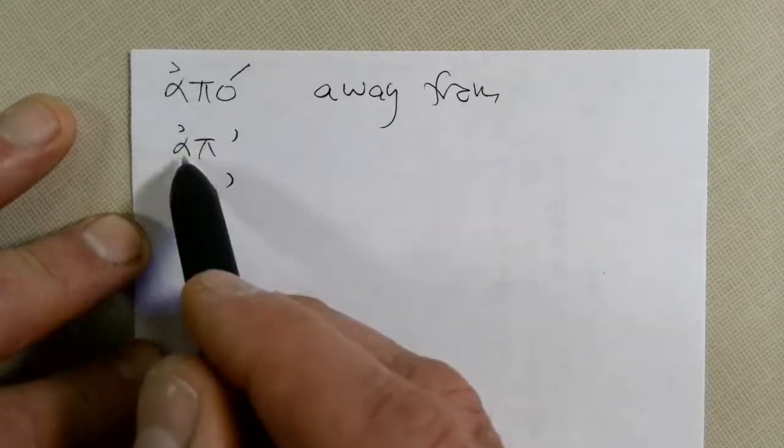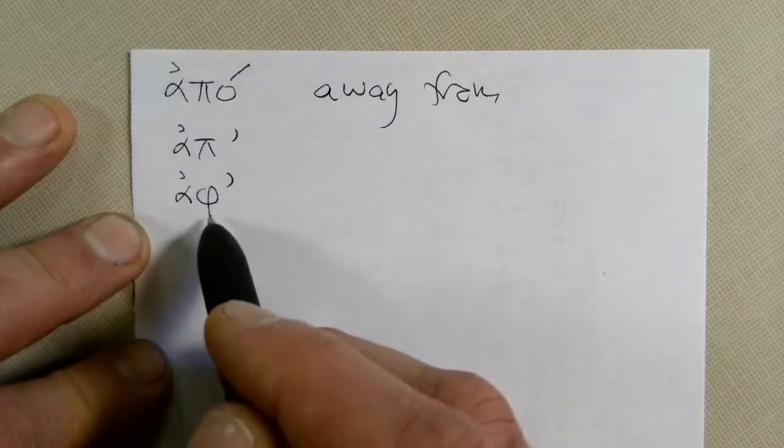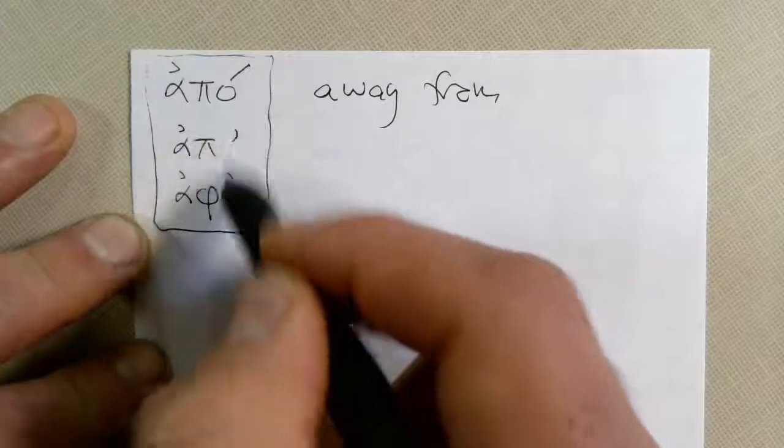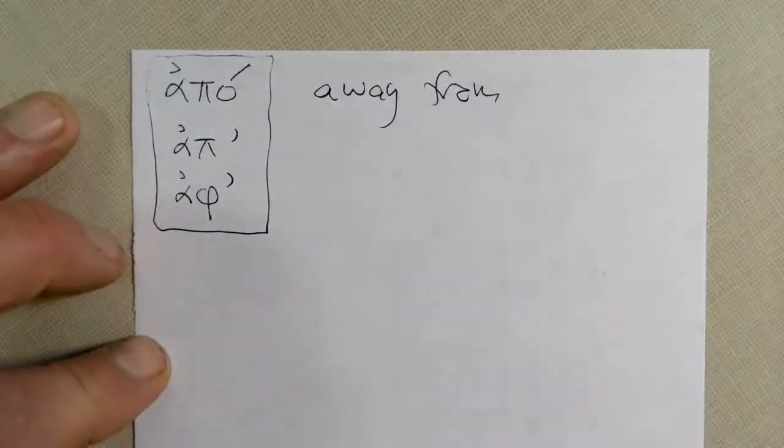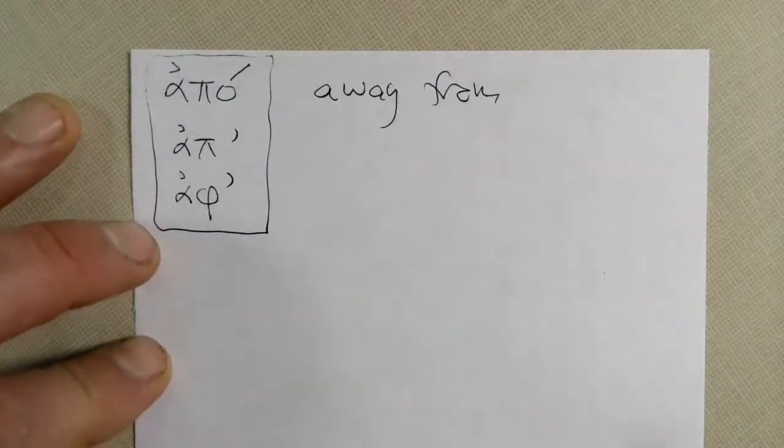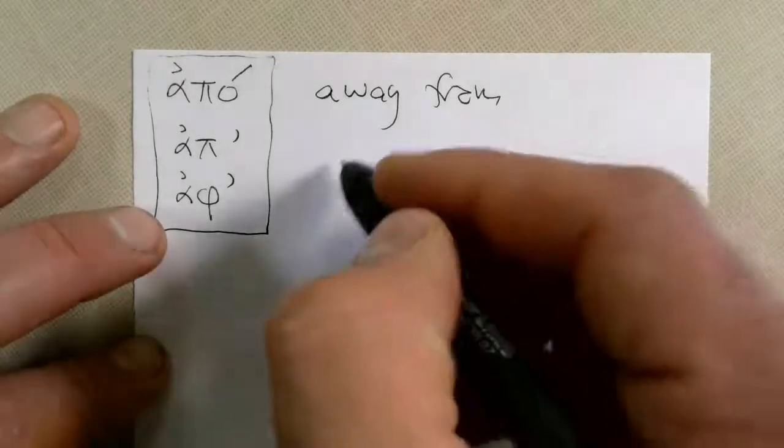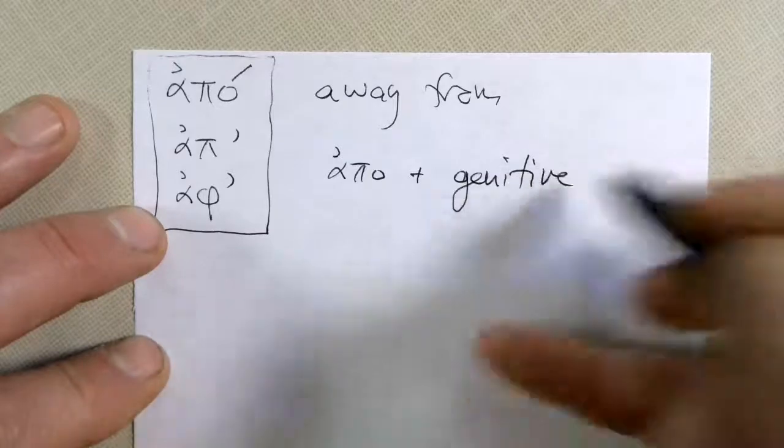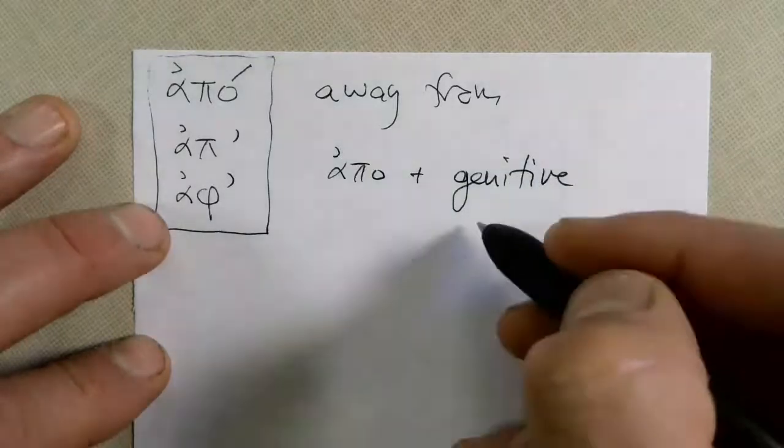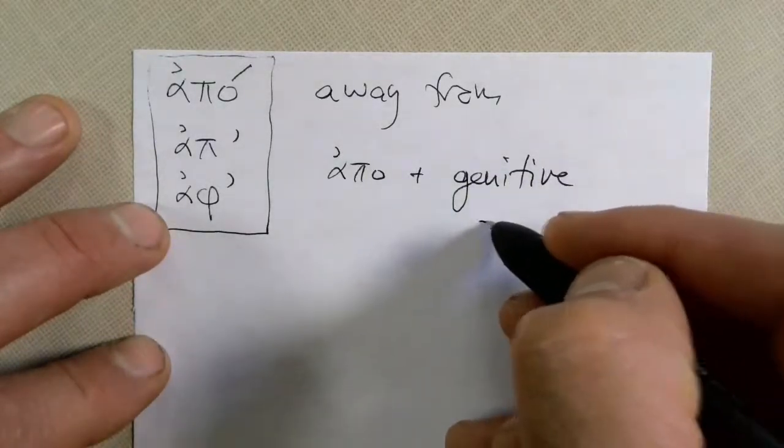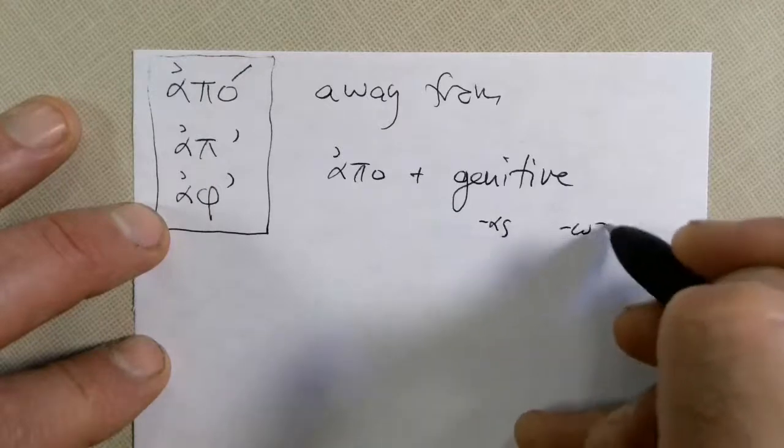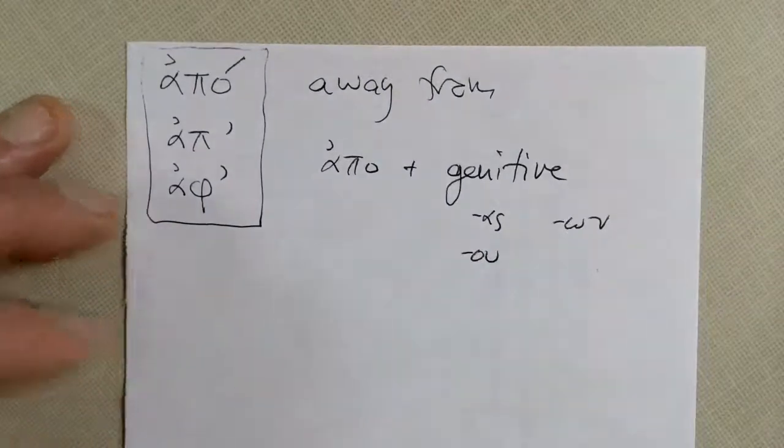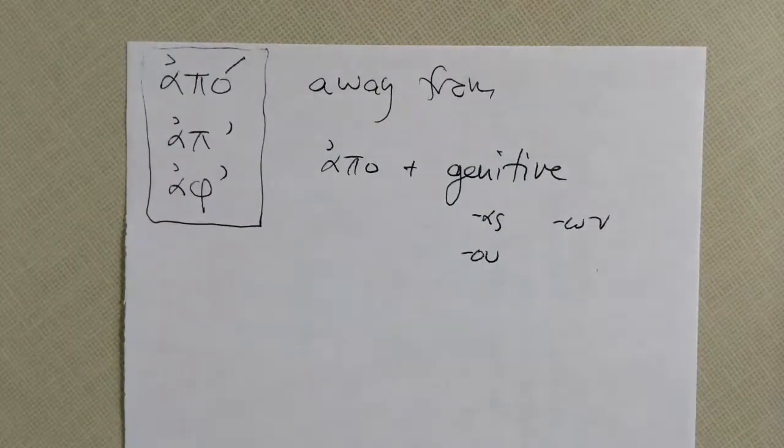So it goes Apo or up or off. All three of these are the exact same word and they change the end to make it sound better with what comes next. But all three of them mean away from and it will take the genitive case. That's the second one down. So it's going to be that os or the own ending, or now with naniu it could be the oo ending.